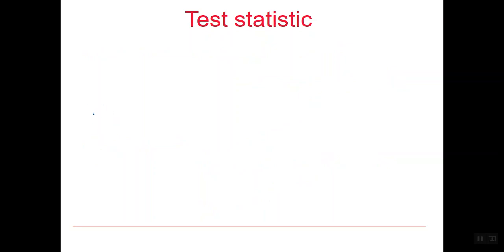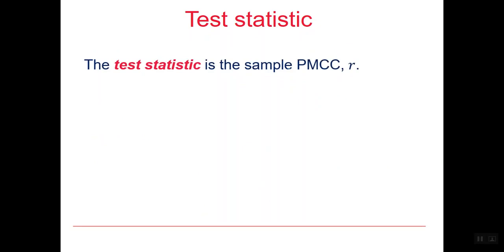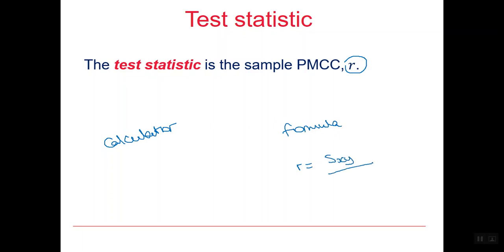We need a test statistic, and the test statistic is the sample product moment correlation coefficient that we can calculate — either using a calculator or using the formula. The formula is that r equals Sxy over the square root of Sxx times Syy, and we showed you how to calculate this in the previous video 1.4.